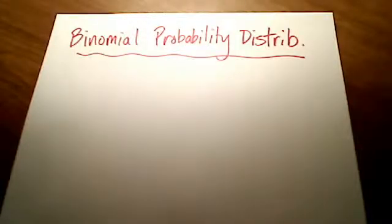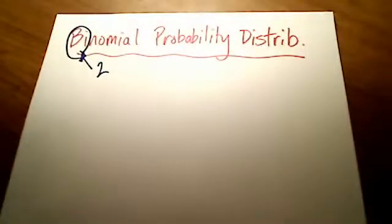Now the first thing that I want to point out to you is this prefix bi right here. That prefix bi simply means the number 2, like bicycle or bifocals or anything with a bi. So when you hear that phrase binomial probability distribution, I want you to think of two possible outcomes.